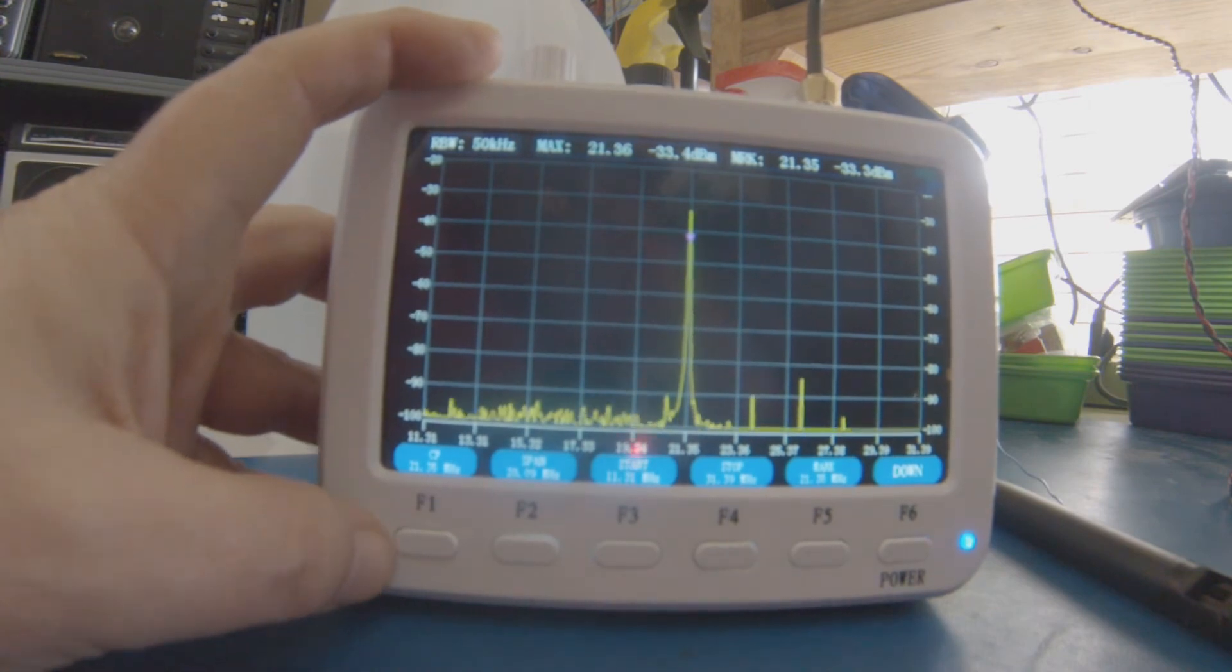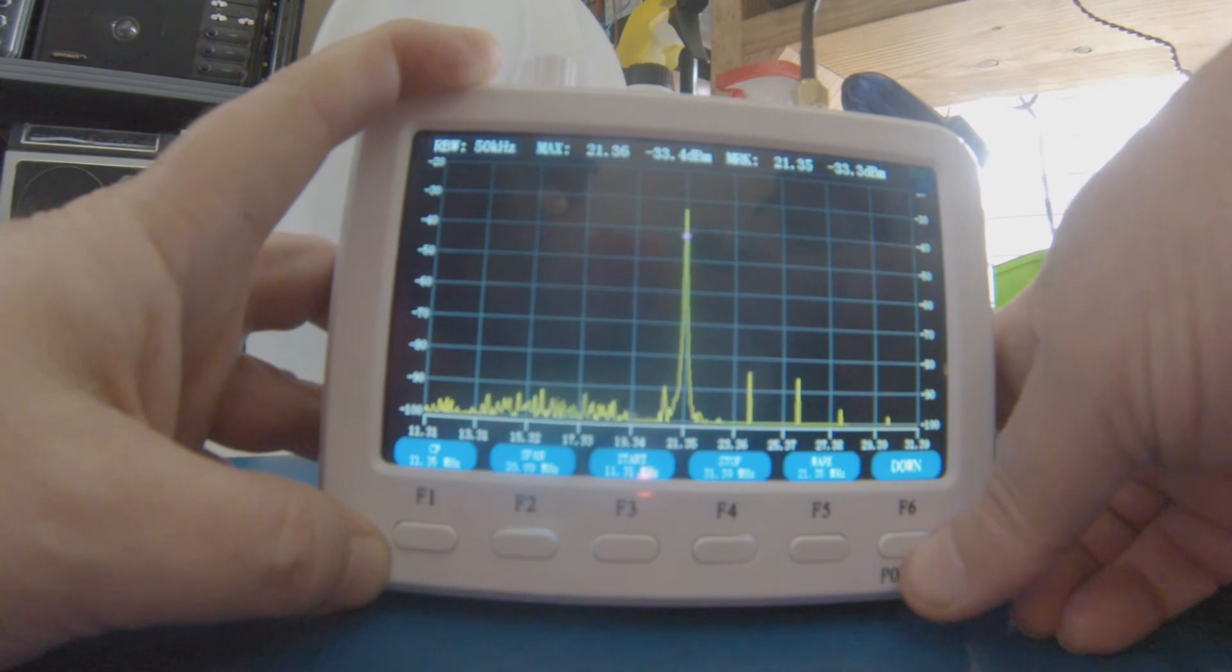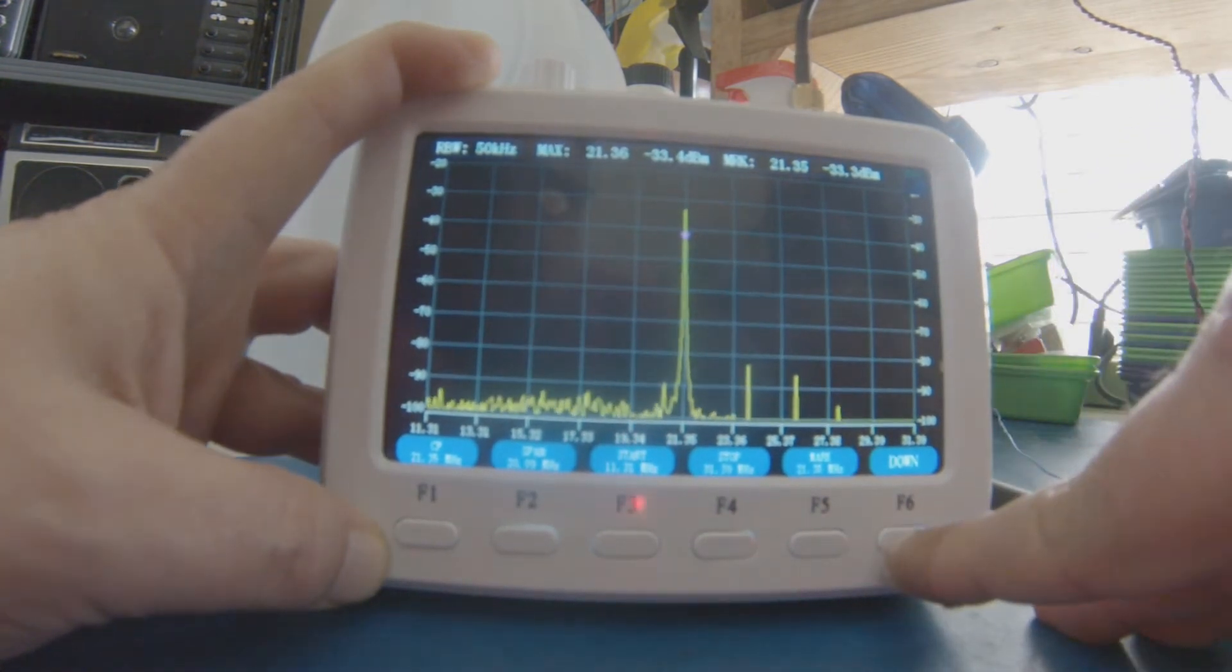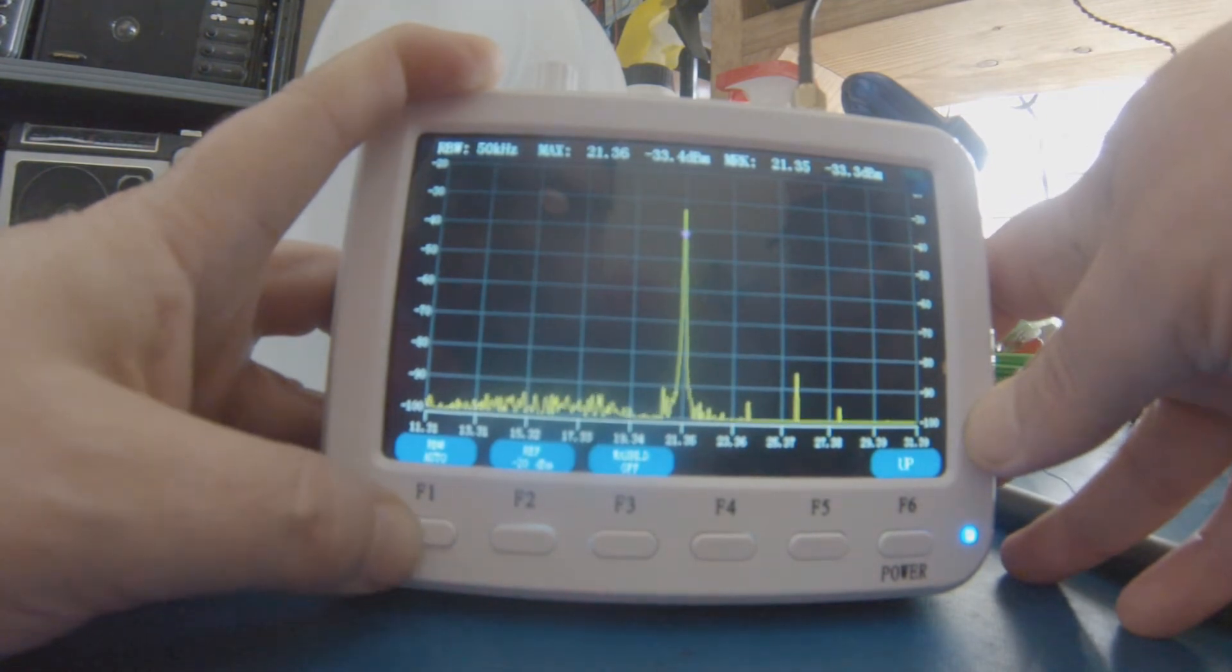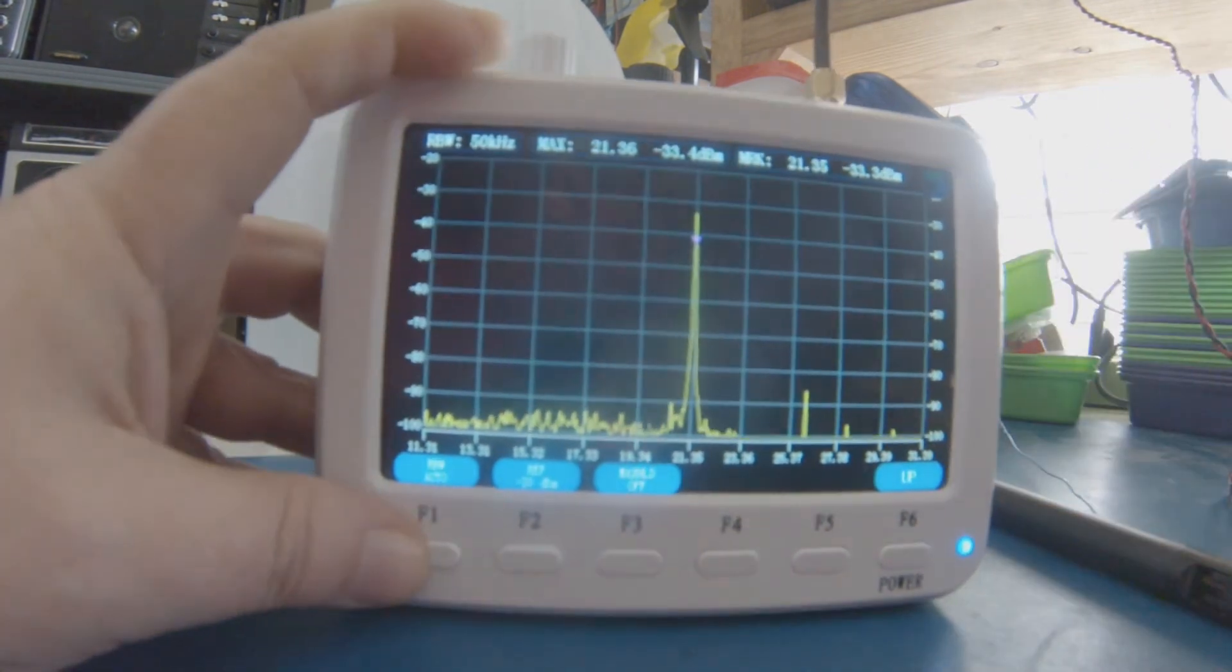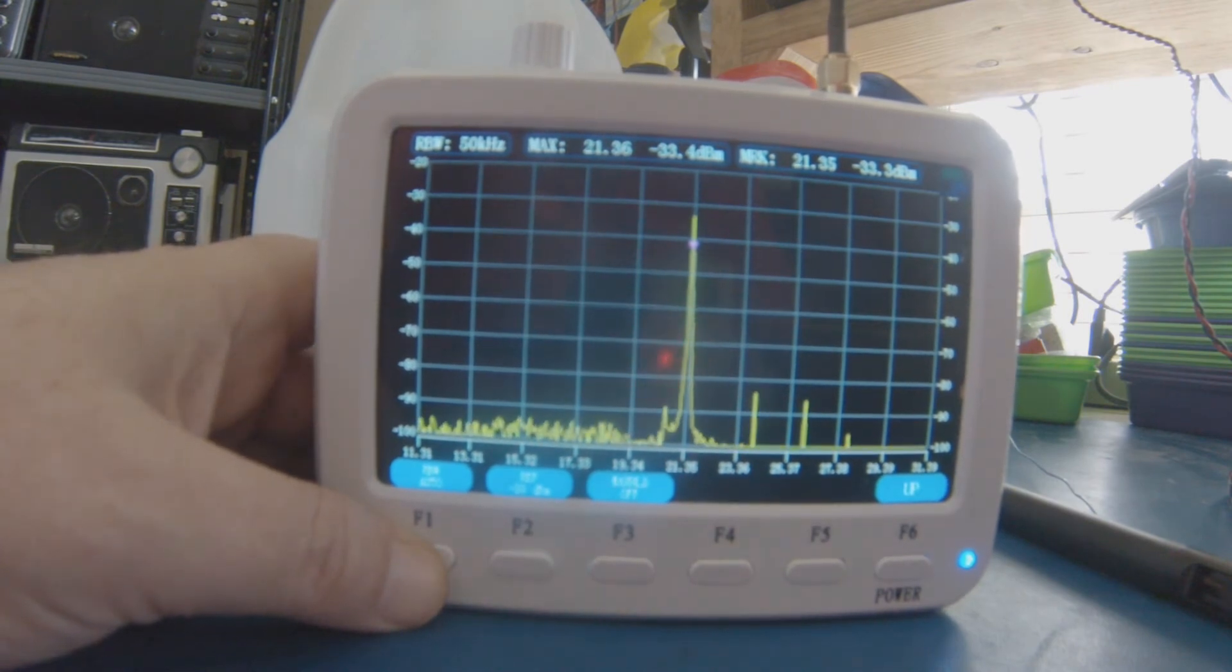Some of you might be curious about the resolution bandwidth function. The right-hand soft key has a down function. So I'm going to go down, and it has preset this to auto. Now I can change it.